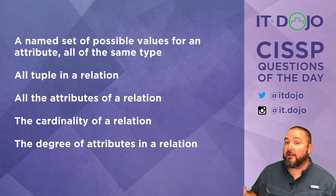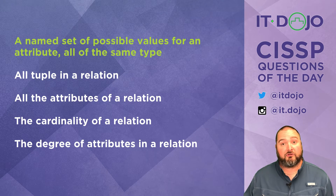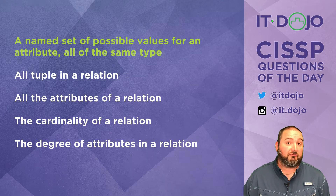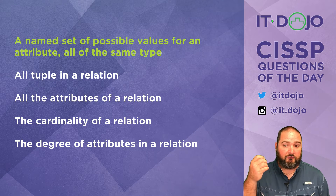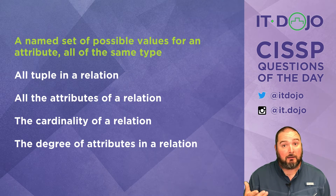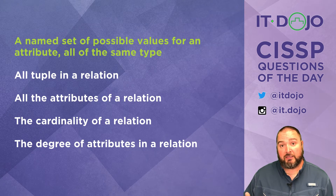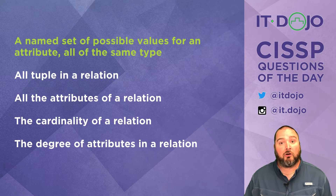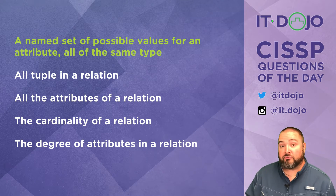The first answer is the right answer: a named set for all the possible values of an attribute, all of the same type. The possible values that you could have for a particular column — for an attribute — is what the domain of the relation is. It's a seemingly confusing way of describing what the possible values are for an individual column, but that's what it's for.